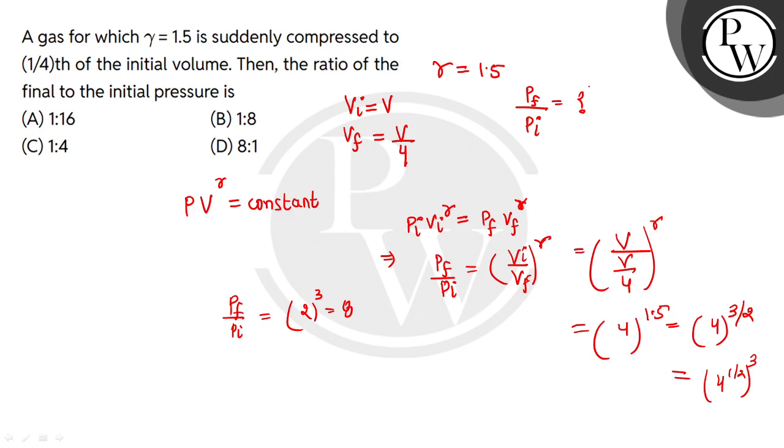So what is your ratio? 8:1. We can write here 8 ratio 1. So option D would be the correct choice. I hope you understood. Thank you so much.